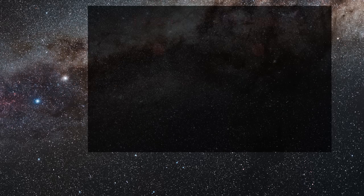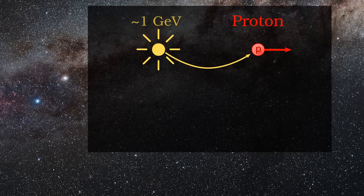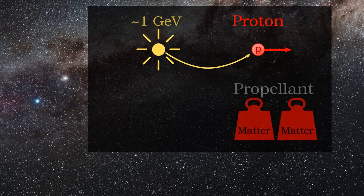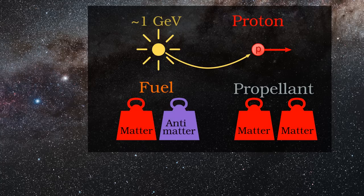Remember that I ran calculations with each proton having 1 GeV or 1 billion electron volts of kinetic energy? This is significant because it means that one proton is carrying the energy equivalent of a second one. So for every kilogram of propellant which will be shot out of the back of the spaceship, about 1 kilogram of fuel must be turned into energy.